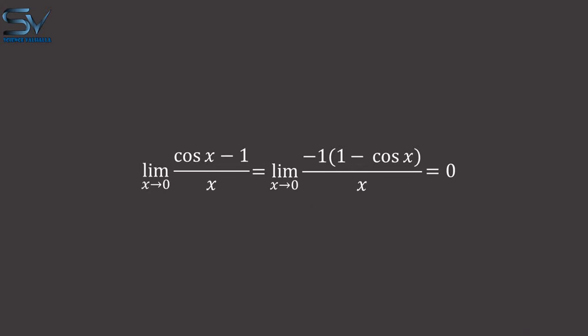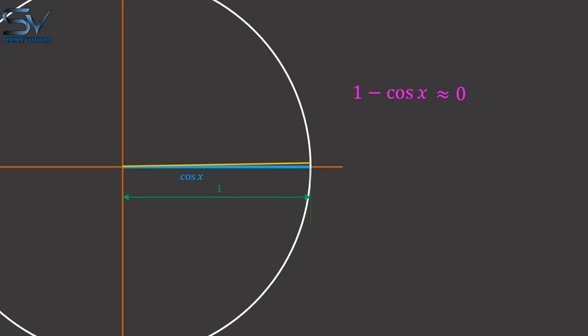However, a question arises here. Won't the denominator also tend to 0, making this 0 divided by 0? Let me respond to this question.